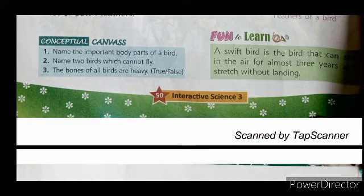Question two: name two birds which cannot fly. Ostrich and emu are birds that cannot fly. Question three: true or false — the bones of all birds are heavy. The statement is false. The bones of all birds are not heavy.